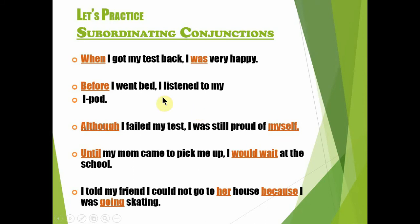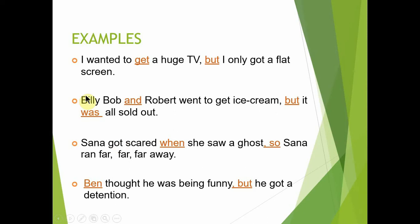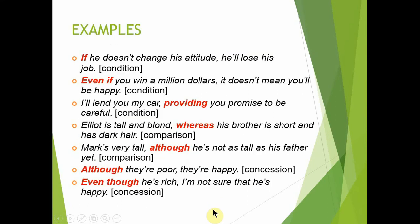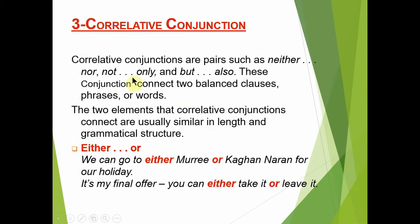Common subordinating conjunctions میں شامل ہیں: so that, since, until, till, as soon as, whenever, while, when, although۔ جب بھی یہ words فکروں کے درمیان آئیں تو انہیں subordinating conjunctions کہیں گے۔ Practice کے لیے دیکھیں: 'When I got my test back, I was very happy' — یہاں when subordinating conjunction ہے۔